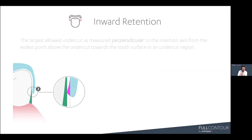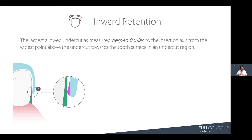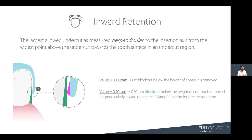For inward retention, we survey the model and apply blockout under the height of contour. This is the largest undercut as measured perpendicular to the insertion axis from the widest point above the undercut toward the tooth surface. If you set inward retention to zero, no blockout below the height of contour is removed, making it more passive. If you want more retention, you add material to be removed — for example, 0.1 mm — removing the blockout perpendicularly inward. We call it clamping underneath the height of contour.